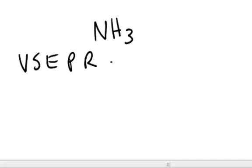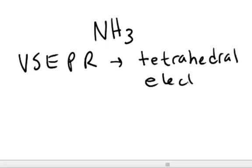Because we have four regions of high electron density for the ammonia, we have three bonding regions, and then we have the non-bonding pair of electrons or the unshared pair of electrons or lone pair of electrons on the central atom as well.